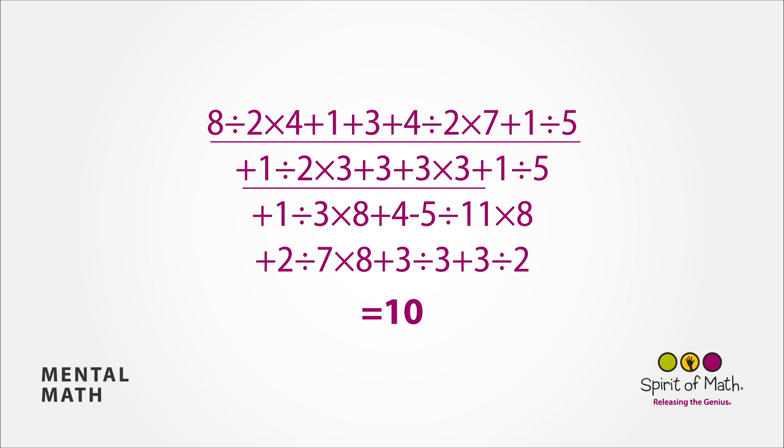Multiply that by 3, gives you 99 and add 1, is 100. Divide that by 5, is 20 and add 1, is 21. Divide it by 3, is 7 and multiply that by 8, gives you 56. Add 4, is 60,